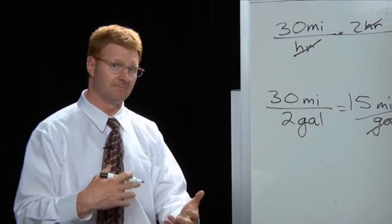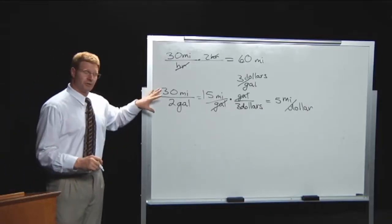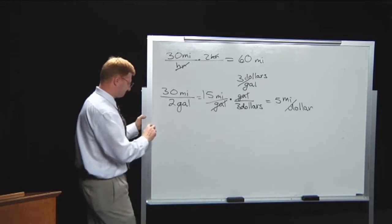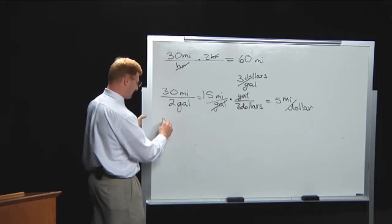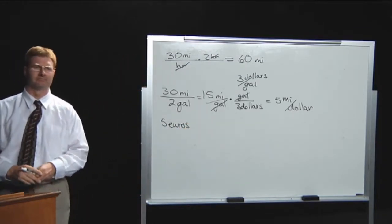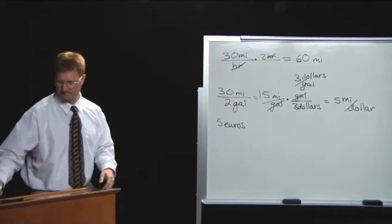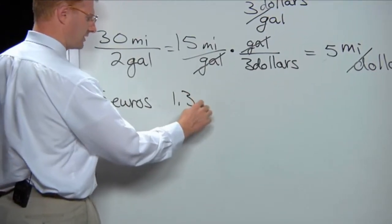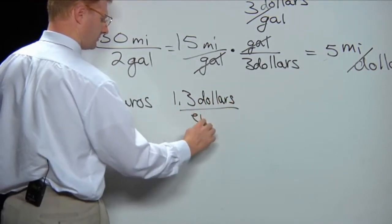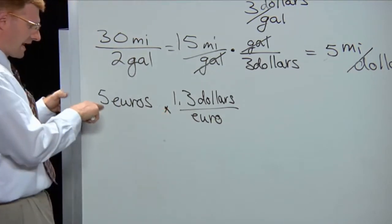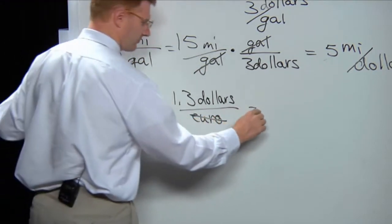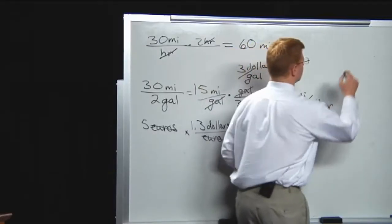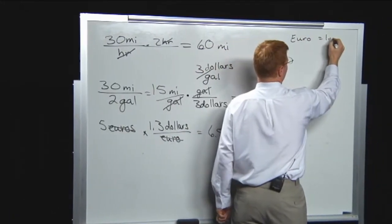Another great use of unit conversions is exchanging money between currencies. If I have five euros, and right now it's about one dollar thirty per euro, I write one point three dollars per euro and multiply. The euros cancel, and I get five times one point three equals six point five dollars. So five euros gives me six dollars and fifty cents.